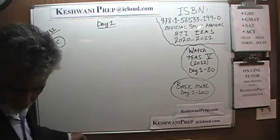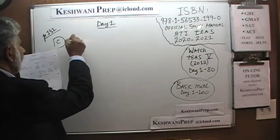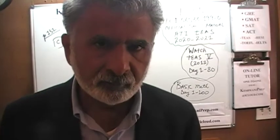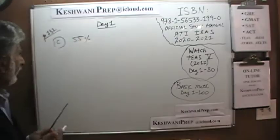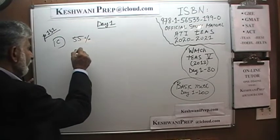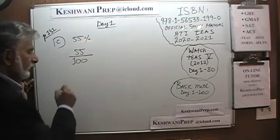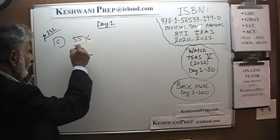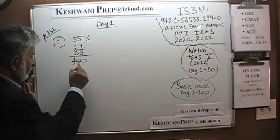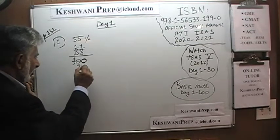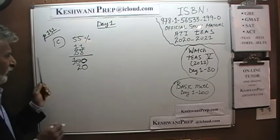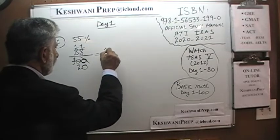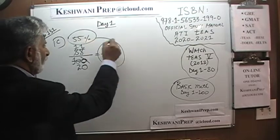Example C: 55%. We convert it into fraction and decimal. 55% means 55 per 100. Can we reduce it? Yes — both are multiples of 5. 100 divided by 5 is 20, and 55 divided by 5 is 11. So 55% in fraction form is 11 over 20.